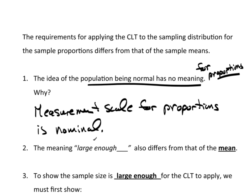How can yeses and nos be normal? The measurement scale for proportions is nominal. They're just labels. Whereas, when we're talking about averages, we need at least interval. If we're talking about survival times, that's time. Those are numbers, actual numbers. They have numerical values.